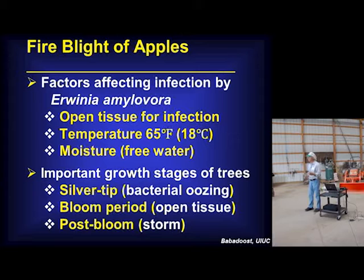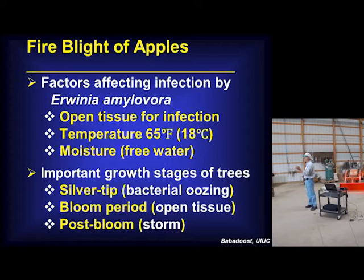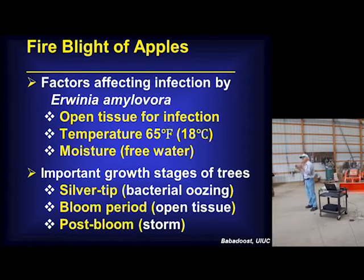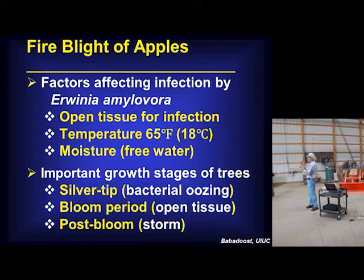Fire blight is a bacterial disease — looks like you put fire on it and killed it. It goes very rapidly. In Calhoun, for example, I used to walk and see completely black trees. Not anymore. Bacterial disease overall needs three factors: one is an opening area for the bacteria to get in. Bacteria — unlike fungus or nematode — is not able to get in until there is an injury, or during bloom when there is an opening from the top. And temperature — 65°F or 60°F plus. Below 60°F, bacteria cannot do much. And moisture — if we don't have water, the bacteria would not be able to spread.